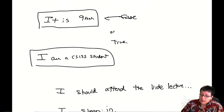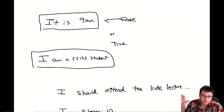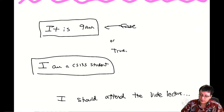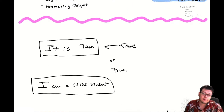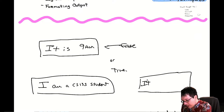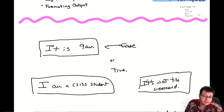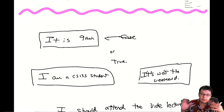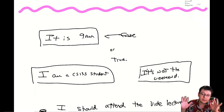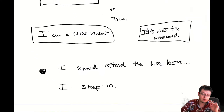My logic is: if it's 9 AM and if I am a CS-135 student — if both are true — then and only then will I attend the video lecture. If either is false, I'm going to sleep in. I can even make it more precise by adding a statement: 'it is not the weekend.' So I'm only going to attend the lecture if all three statements are true. For example, it could be 9 AM and I'm a student, but it could be Sunday — so I sleep in. Or it could be 7 PM on a Monday — not going to attend because it's not 9 AM.